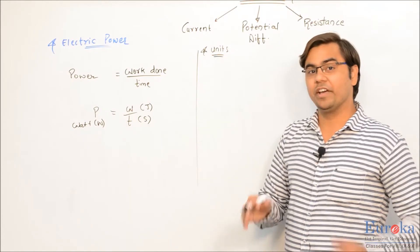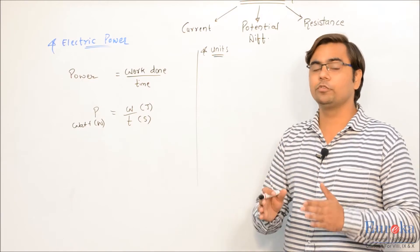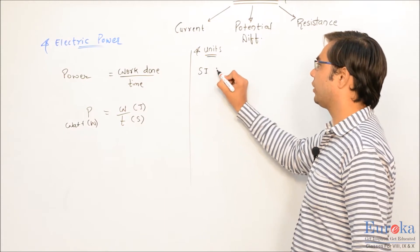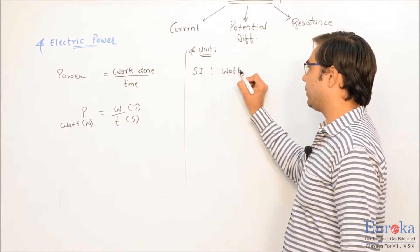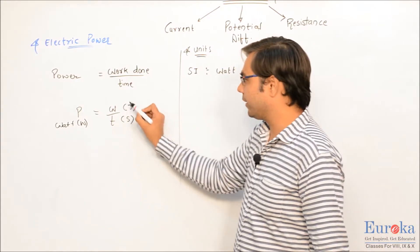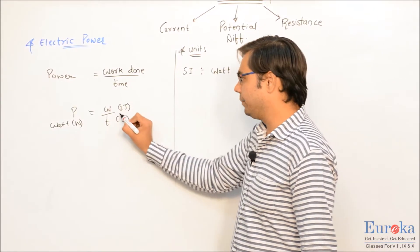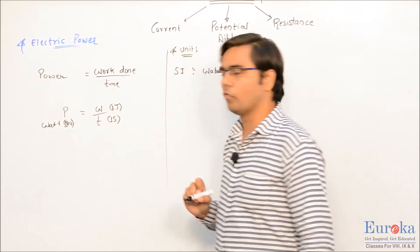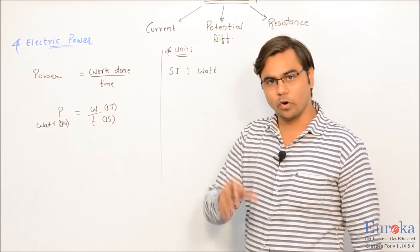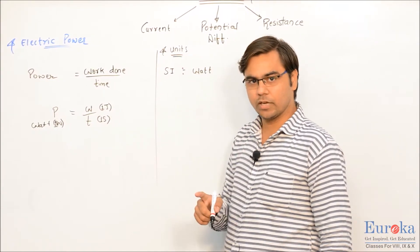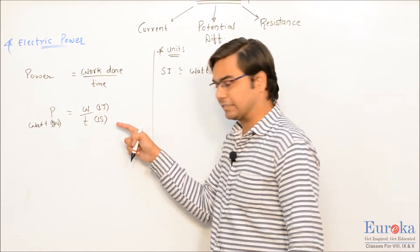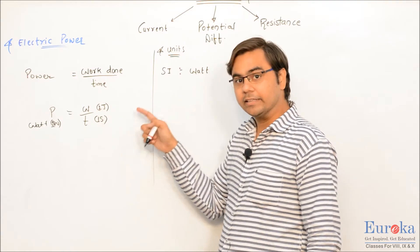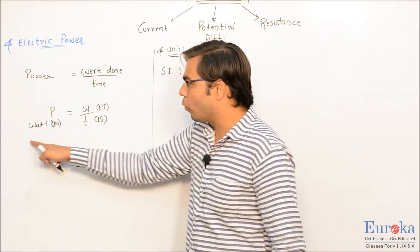Whenever there is a new unit, we have to define it as well. The SI unit of power is Watt, and one Watt can be defined easily: if the work done is one joule and the time is one second, then one divided by one equals one Watt. So we can say that if one joule of work is done per second, then the power applied is said to be one Watt.